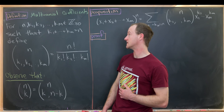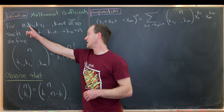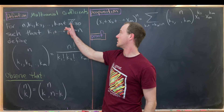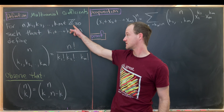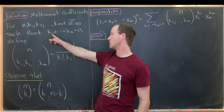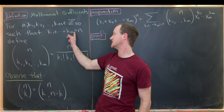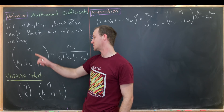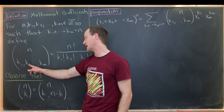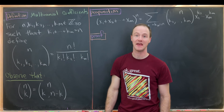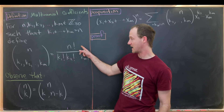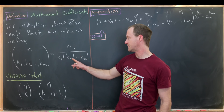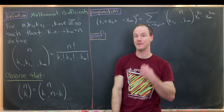So let's see how these things are defined. For n, k1, k2, up to km, which are non-negative integers satisfying the rule that the sum of all of the k's is equal to n, we define the multinomial coefficient n choose k1, k2, k3, all the way up to km, as n factorial over k1 factorial times k2 factorial, all the way up to km factorial.